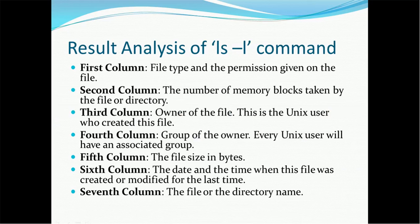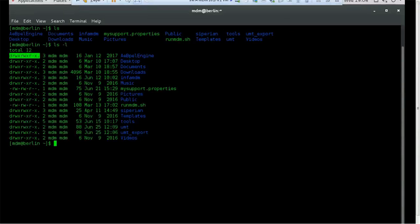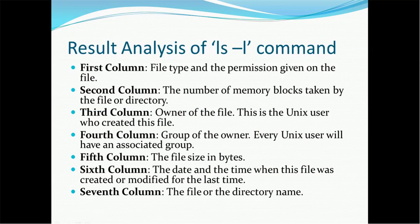Let's go ahead and see the next detail, the second column. The number of memory blocks taken by the file or directory will be listed in the second column. So for example, aebpl engine, this directory holds three blocks. Desktop directory holds two blocks. The file my support holds one block. So these are the block information available in the second column. That is memory block.